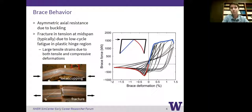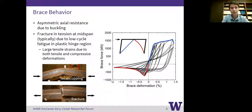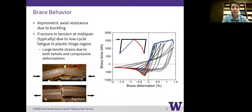Fundamental to the behavior of concentrically braced frames is the brace behavior. What we see is an asymmetric axial resistance, largely driven by the buckling in compression that you see in the negative portion of the curve. Braces fracture in tension at their mid-span typically, due to a low cycle fatigue issue in the plastic hinge region. The top photo shows this local cupping deformation, where you get high accumulation of tensile strains in that plastic hinge region in both tension and compression.